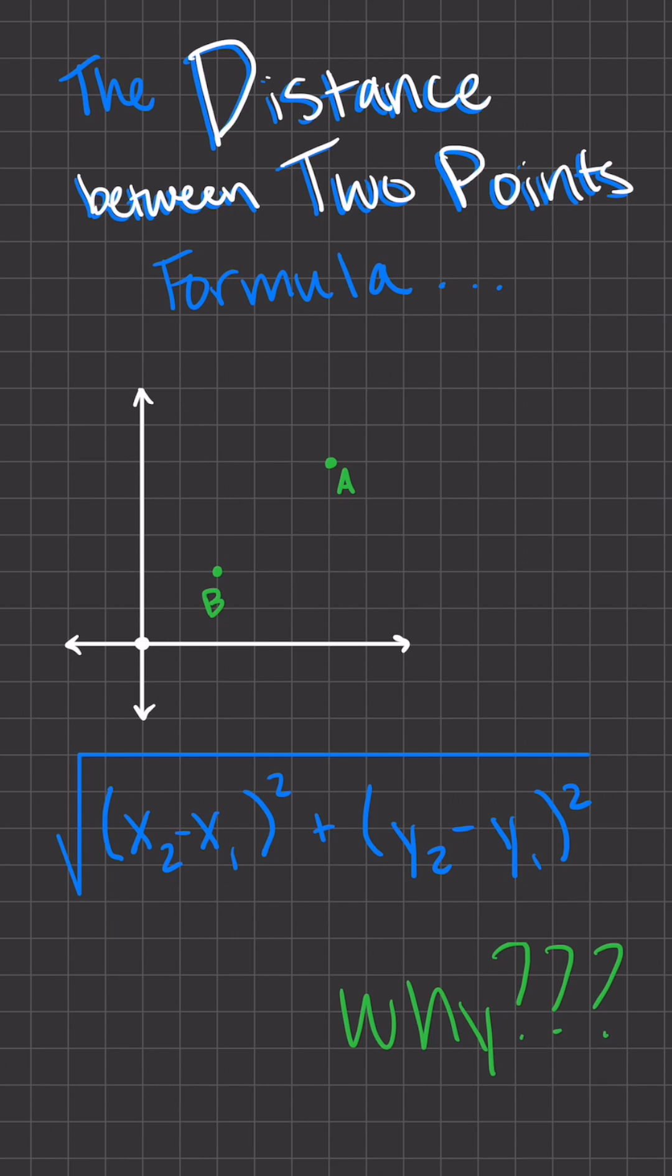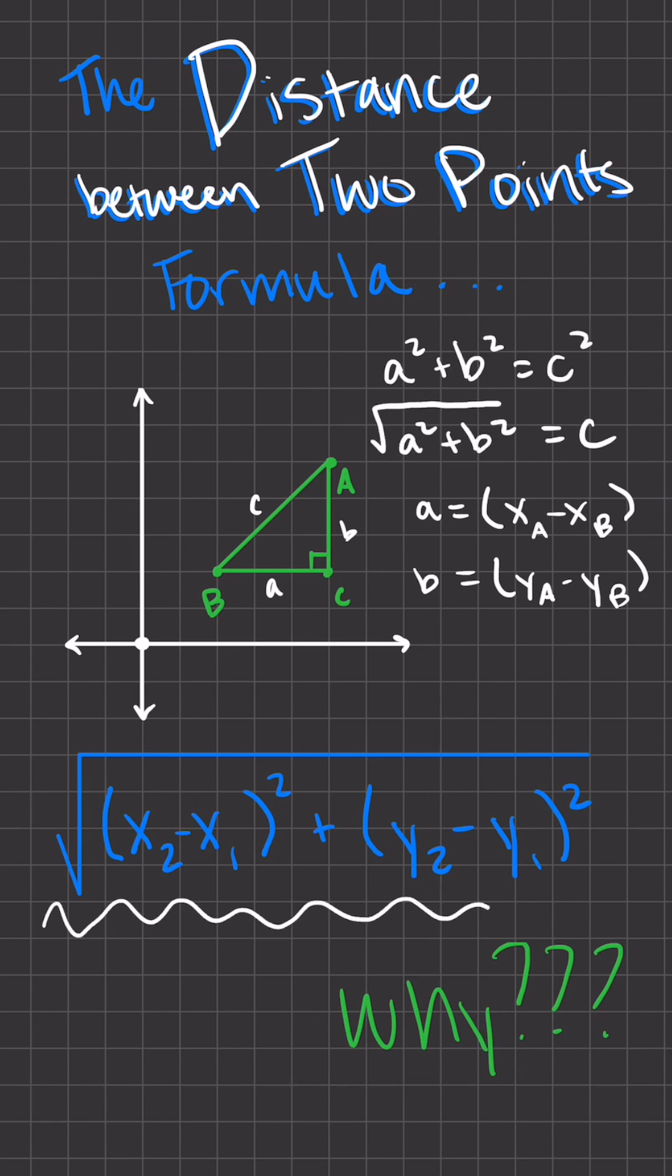If we think of the two points as points A and B of a right triangle, then we could also find the lengths of sides A and B by using the x and y coordinates of points A and B. Then using the Pythagorean theorem, we can solve for side C, which is the distance between our two points.